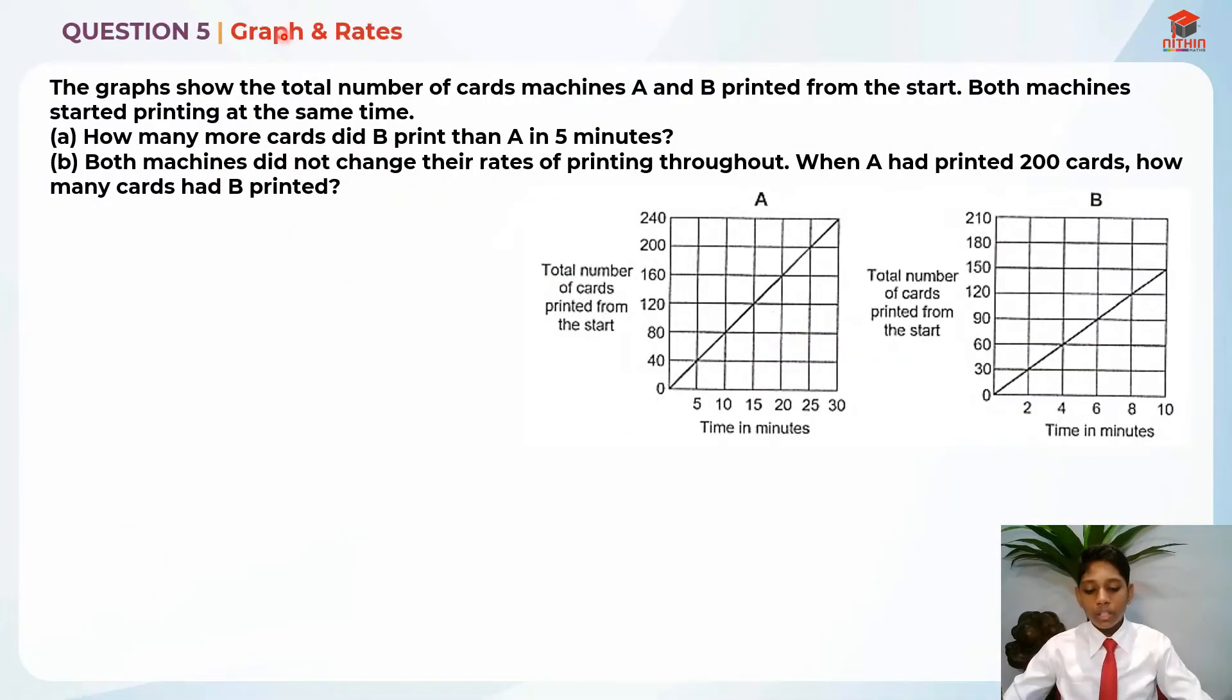This is question 5 and question 5 is testing us on graphs and rates. The graphs show the total number of cards machines A and B printed from the start. There's two graphs A and B and both machines started printing at the same time. This is important, they both started printing at the same time.